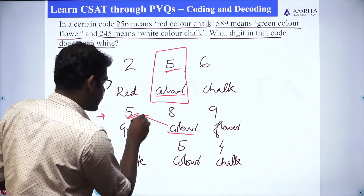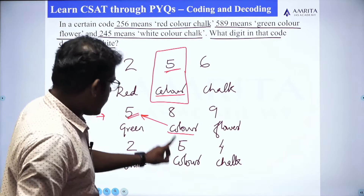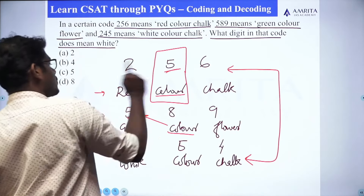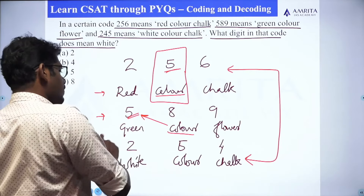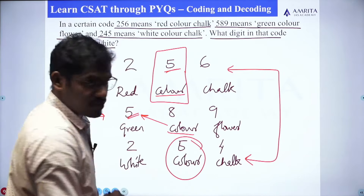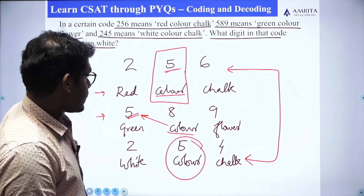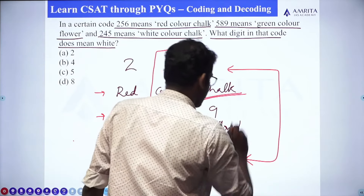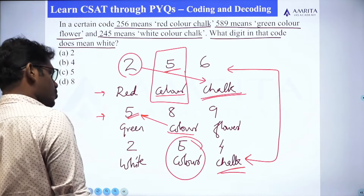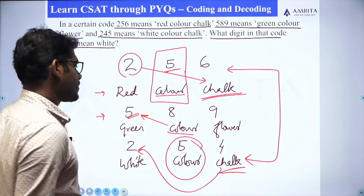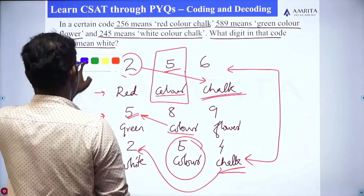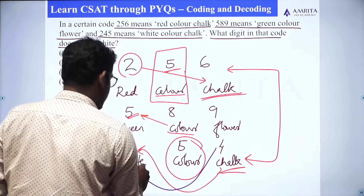Color is coded with 5 in both statements. Now look at the first and third: red color chalk coded as 2-5-6, and white color chalk coded as 2-5-4. We know color is coded with 5. What is common between first and third? It is chalk. And the common code digit is 2. So chalk is coded with 2. Then we can say white is coded with 4.